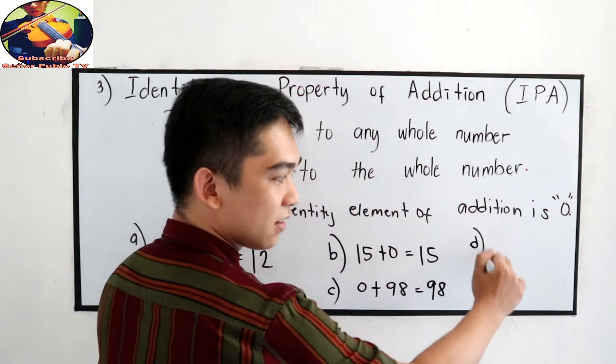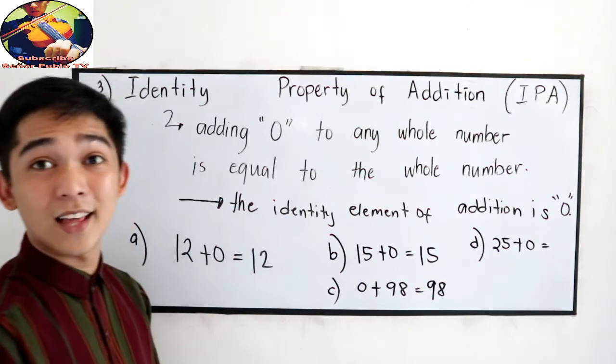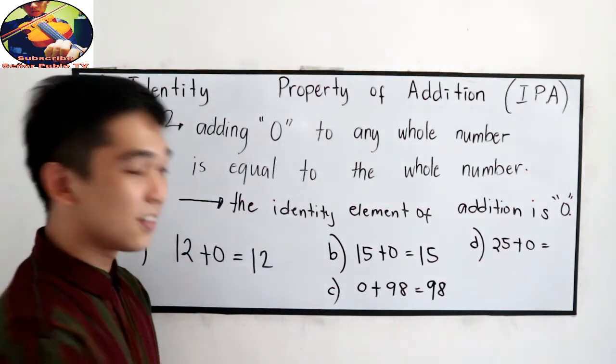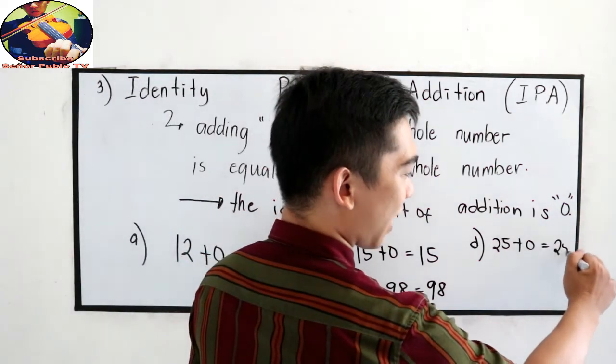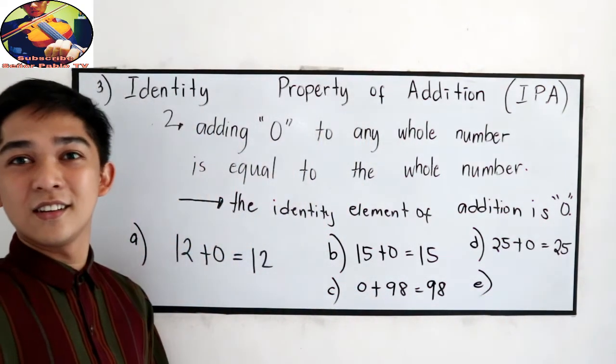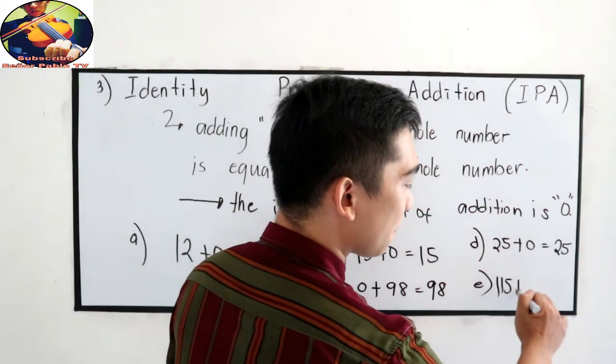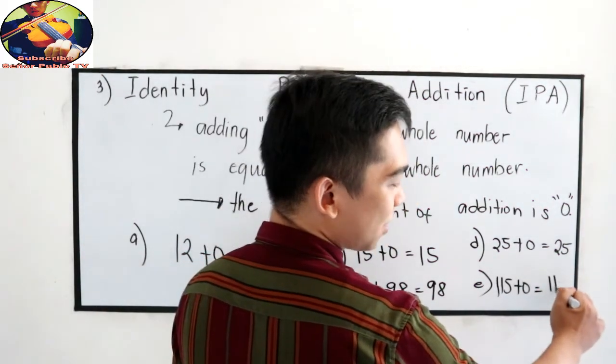Letter D: 25 plus zero. That is 25. Letter E: 115 plus zero is equal to 115.